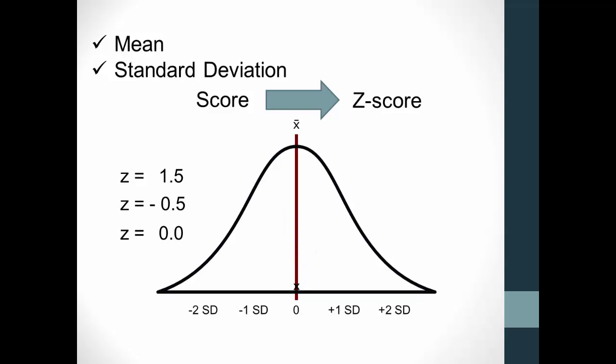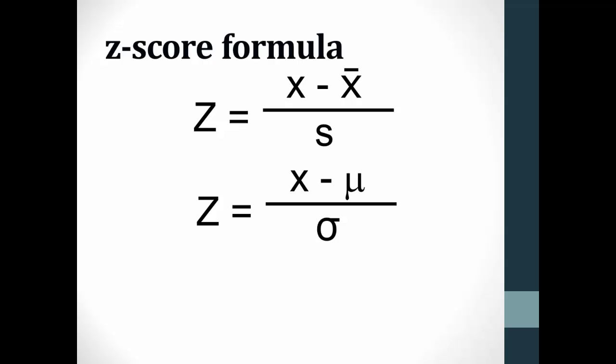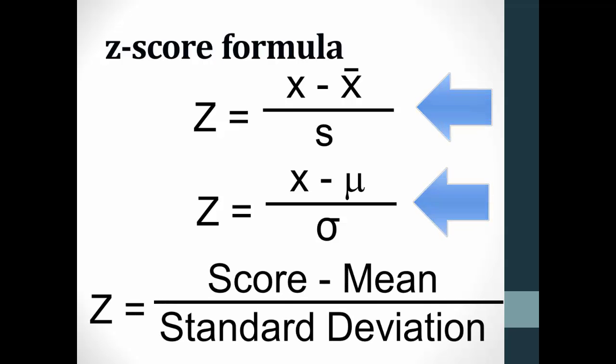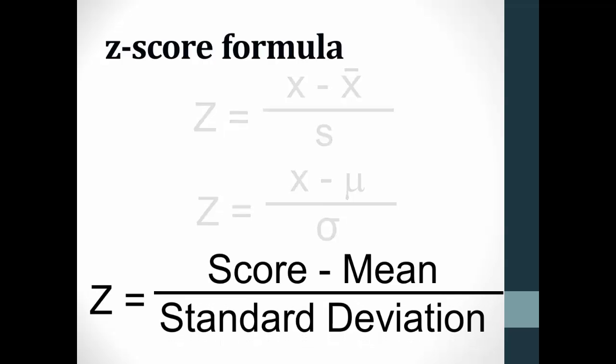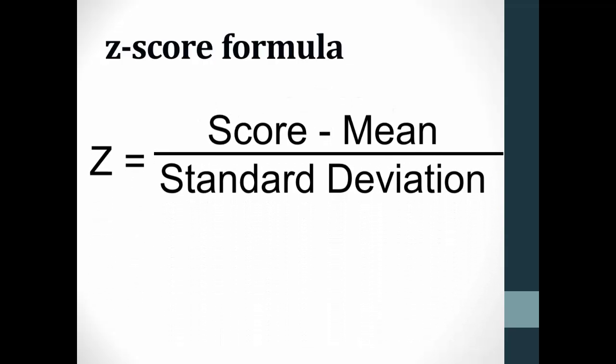Oh, and of course you would need the formula. You could see this formula written in a variety of ways depending upon if you are calculating z-scores in a sample or in a population. They all mean the same thing: the score minus the mean of the distribution divided by the standard deviation. So all you need to know to calculate a z-score is the score you're interested in, the mean of the distribution, and the standard deviation for that distribution.